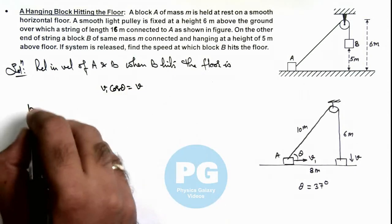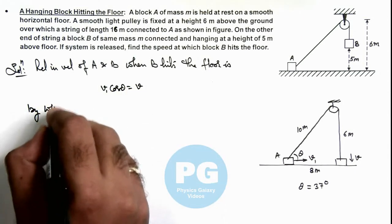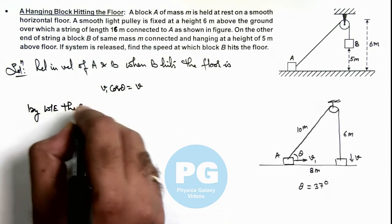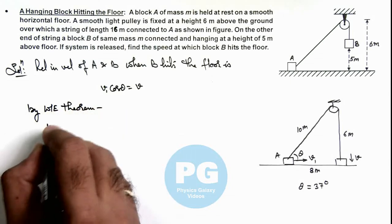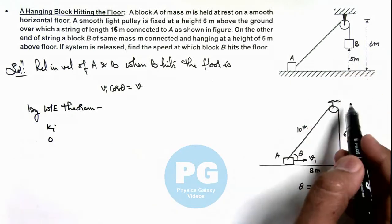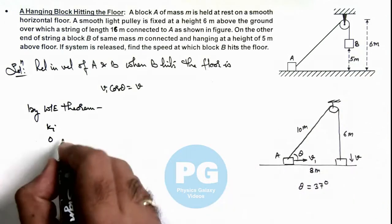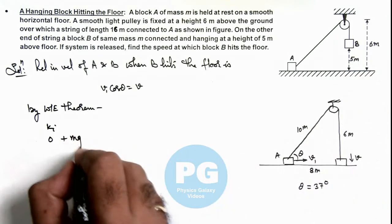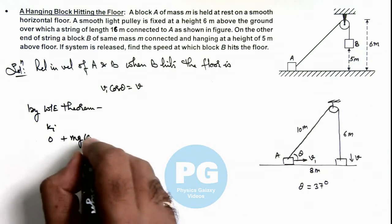And here we can write by work-energy theorem: initial kinetic energy of the two blocks is zero, and block B has fallen down by distance 5 meters. So we can write m g h, work done by gravity which is 5.